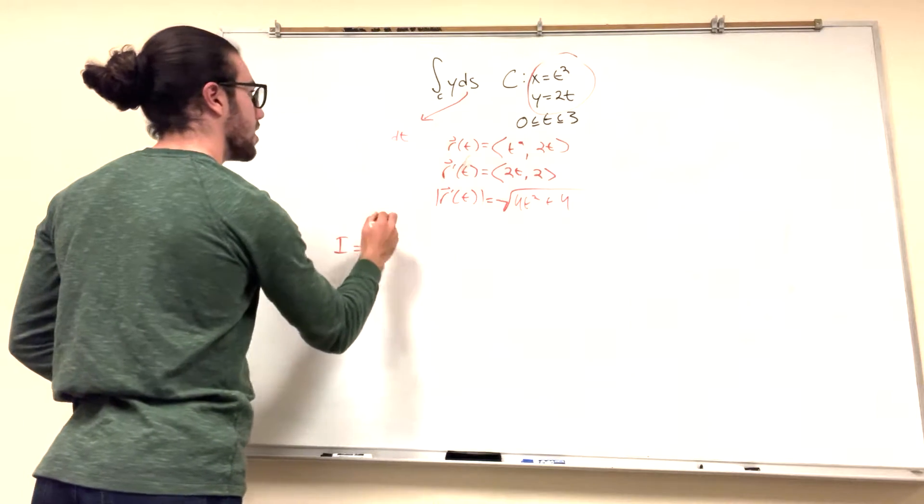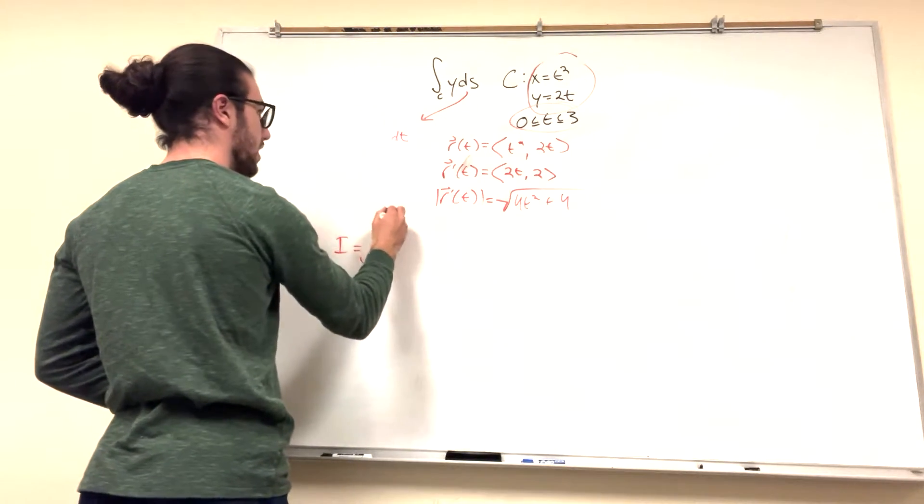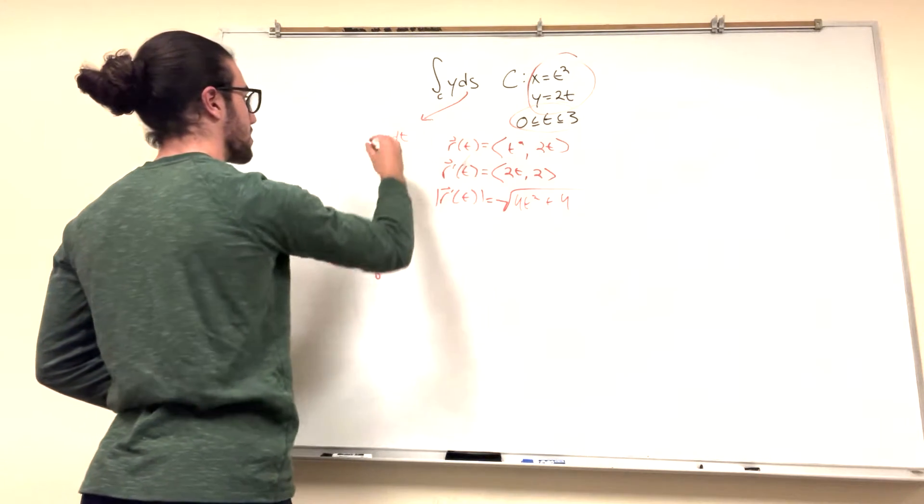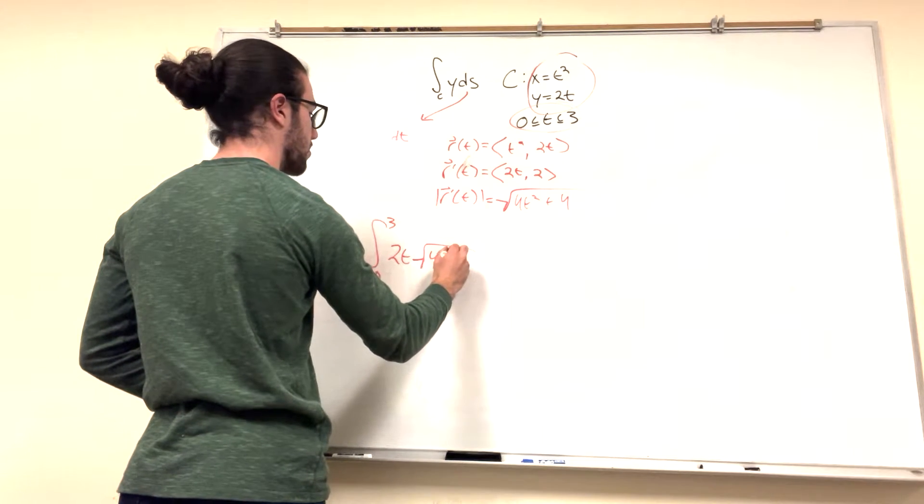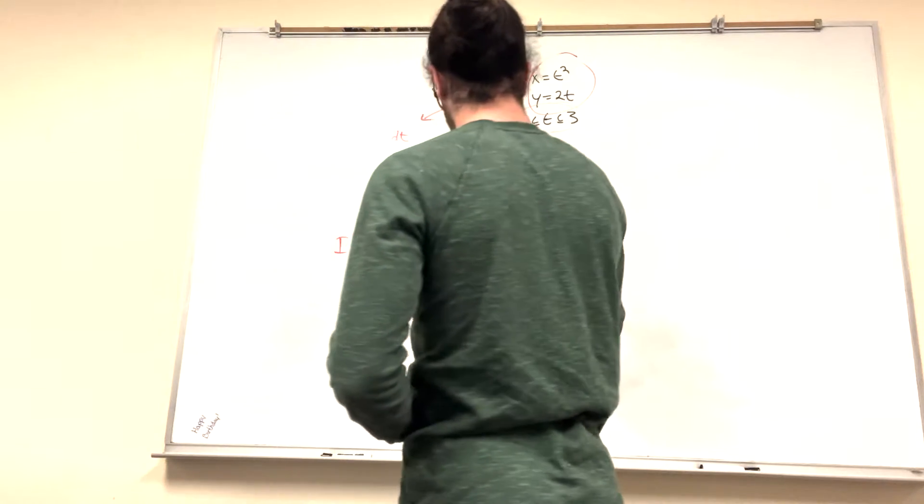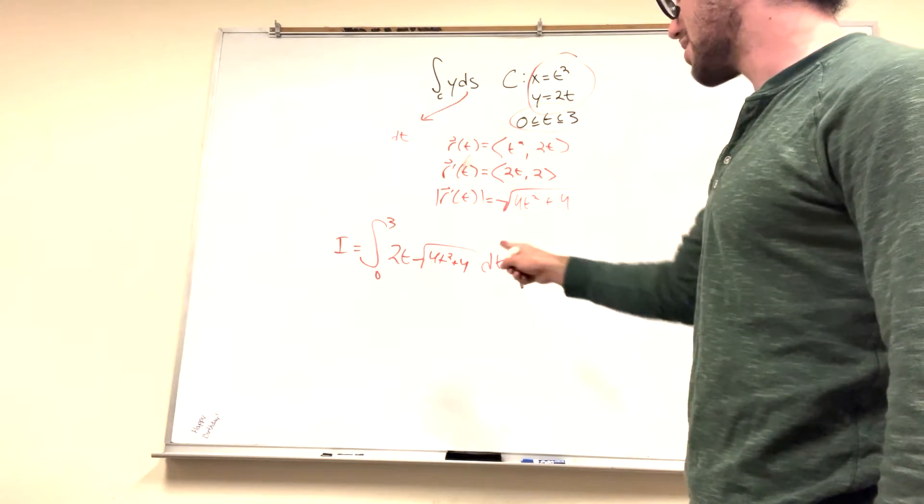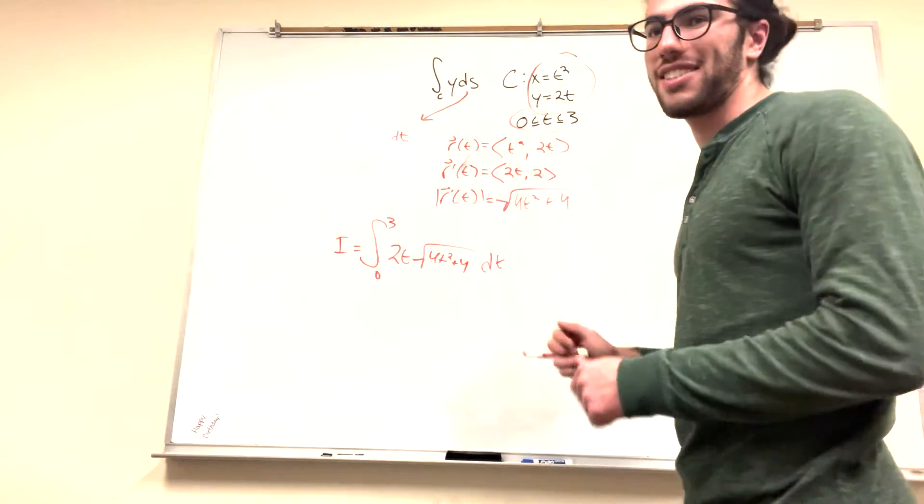So our integral is going to be, and actually we even have our bounds of t which is between 0 and 3. So 0 and 3. 2t because y equals 2t. ds becomes magnitude which is square root of 4t squared plus 4 dt. And there we go. We have an integral that is actually in terms of one variable. That's a 4 not a y. It's in terms of one variable t and we can solve it.